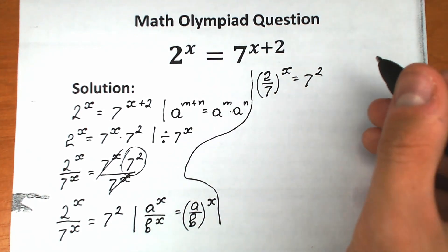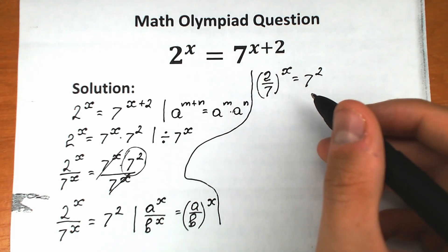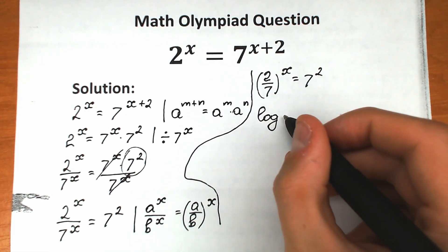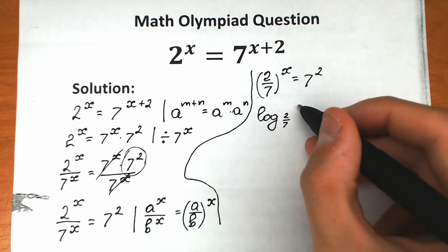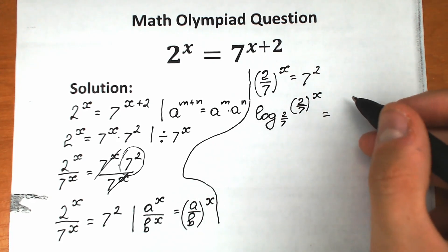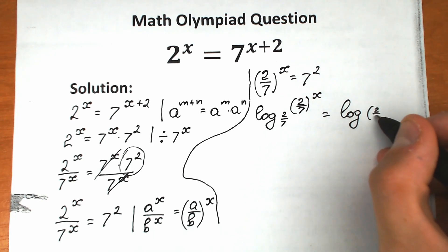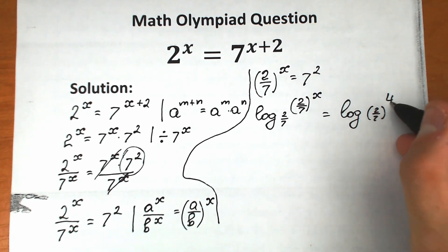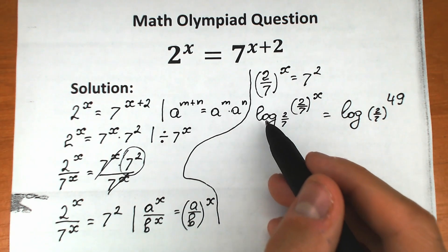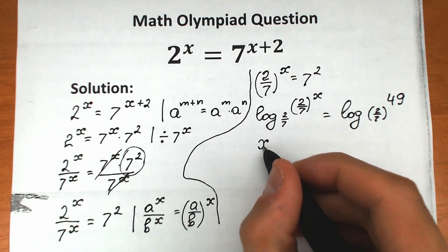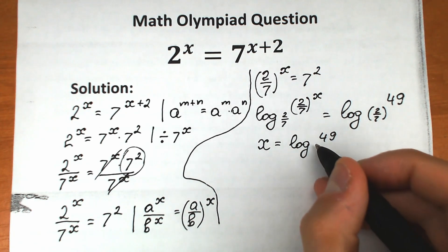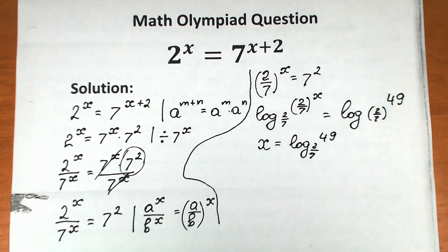Now let's apply a logarithm to both sides. We'll use log base 2 over 7. So log base (2/7) of (2/7) to the power x equals log base (2/7) of 49. The log of (2/7) base (2/7) simplifies to 1, so on the left-hand side we're left with just x. Therefore x equals log base (2/7) of 49.